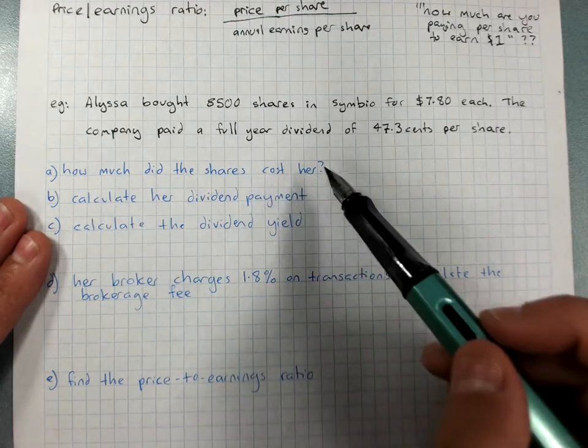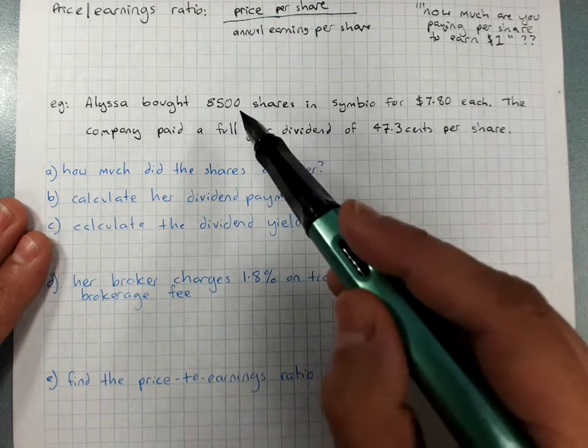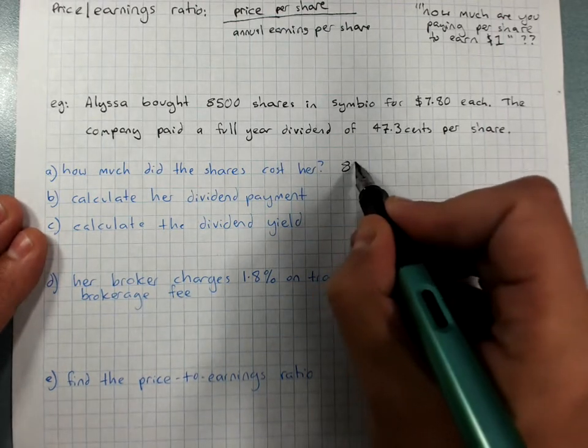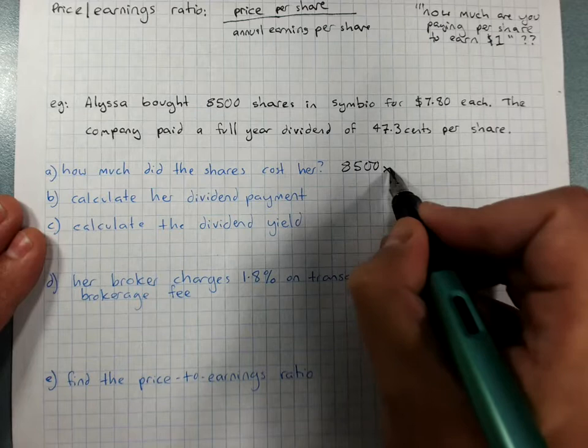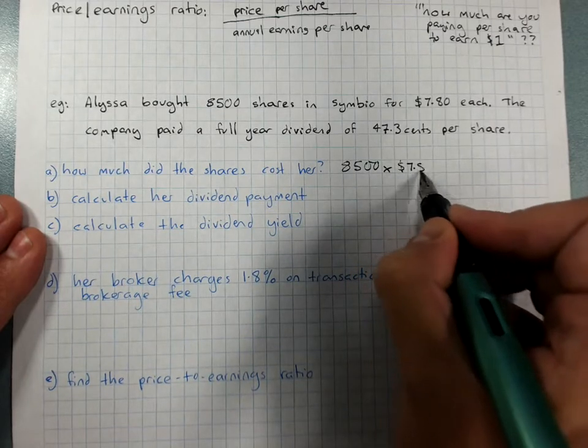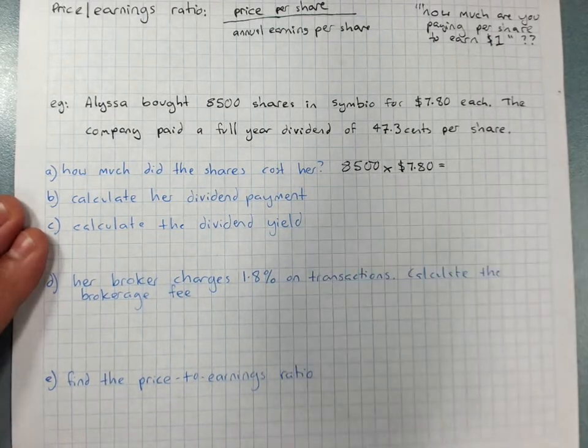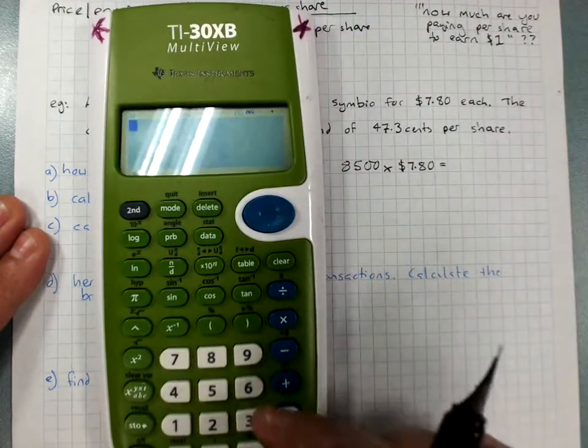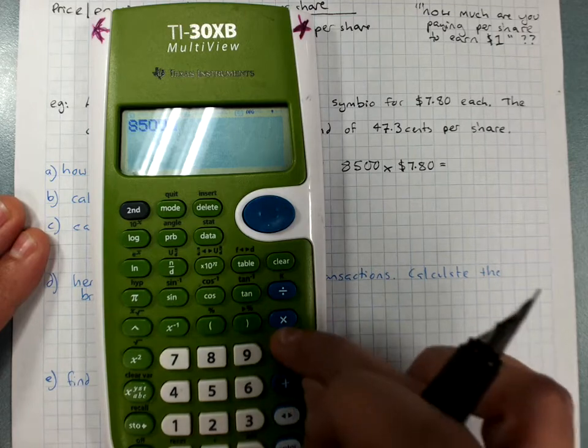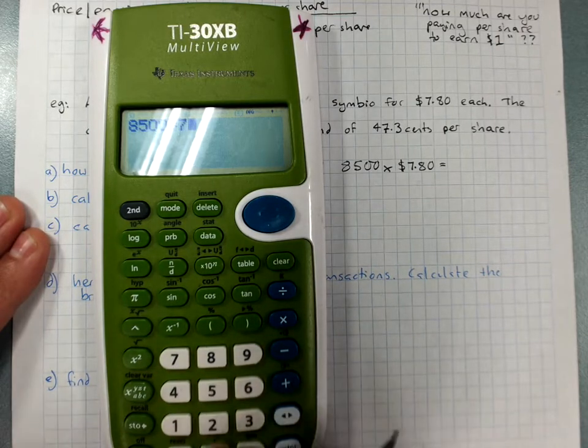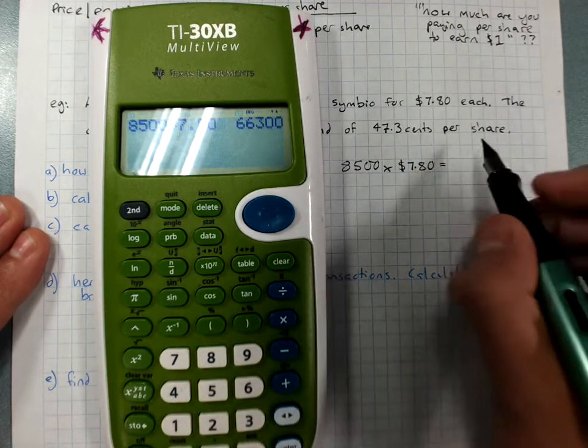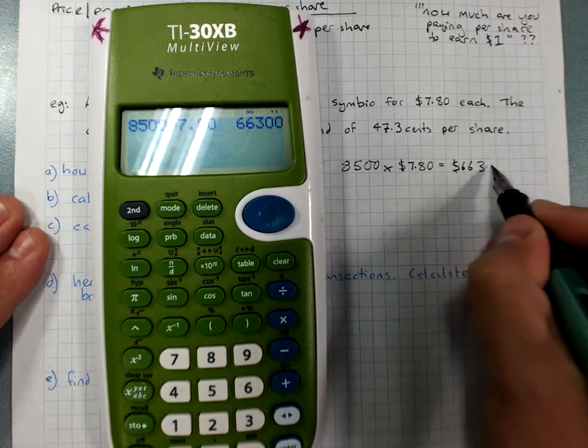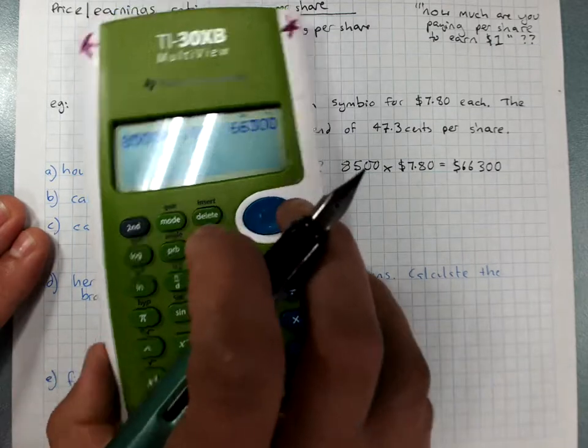How much did the shares cost her? Well $7.80 each and she bought 8,500 shares. So we'll do our working. 8,500 times the cost per share. Grab your calculator. So that was $66,300 that it cost her to buy those shares.